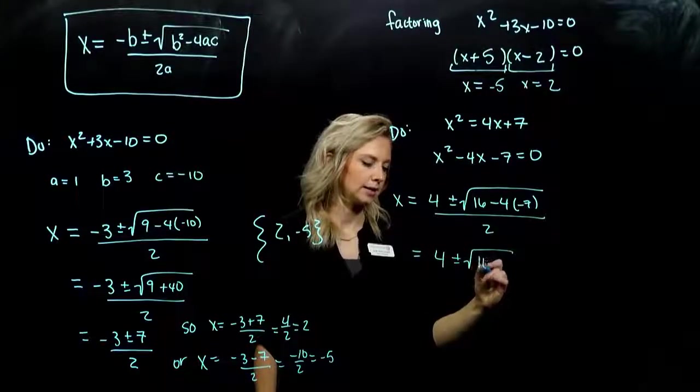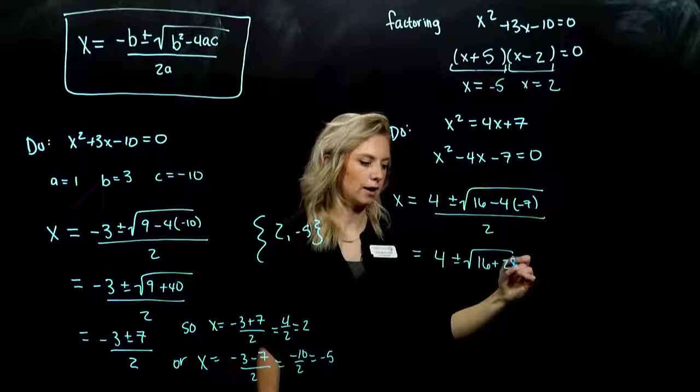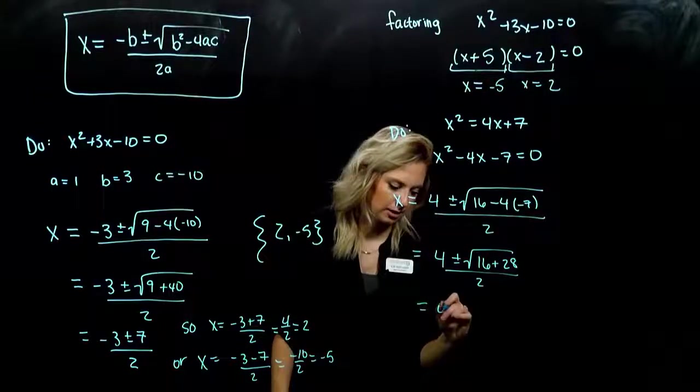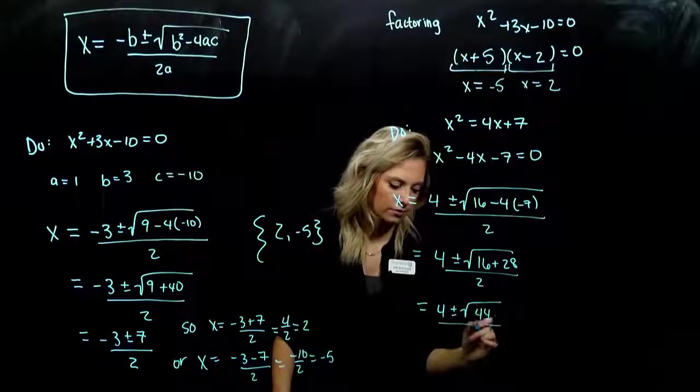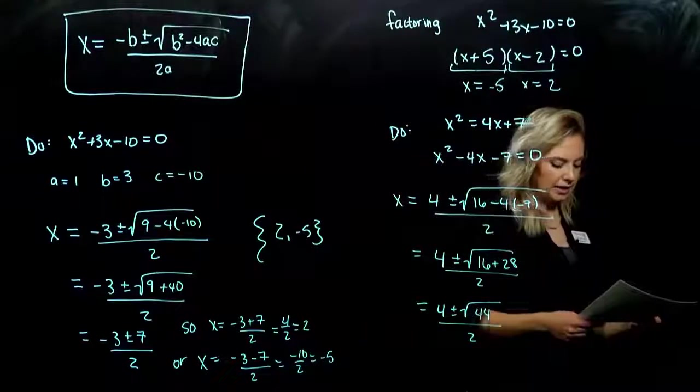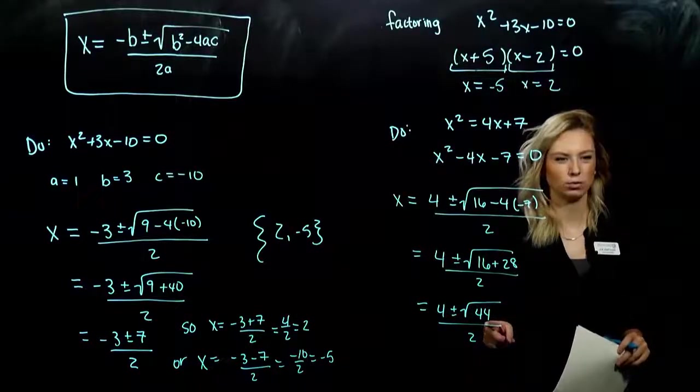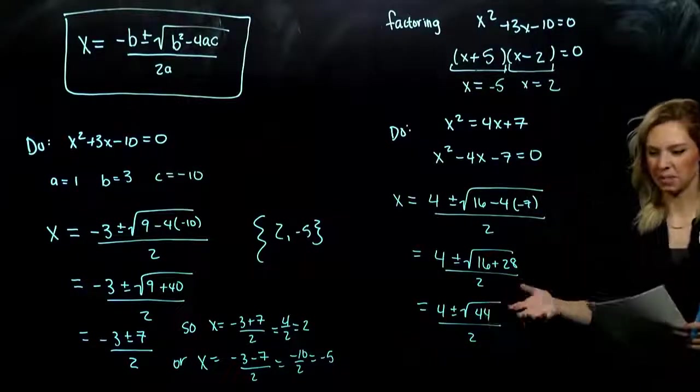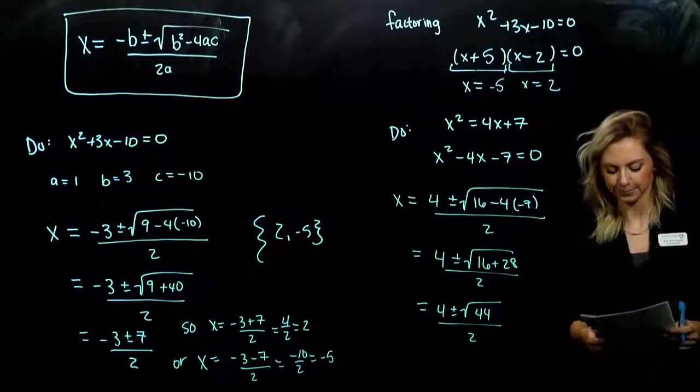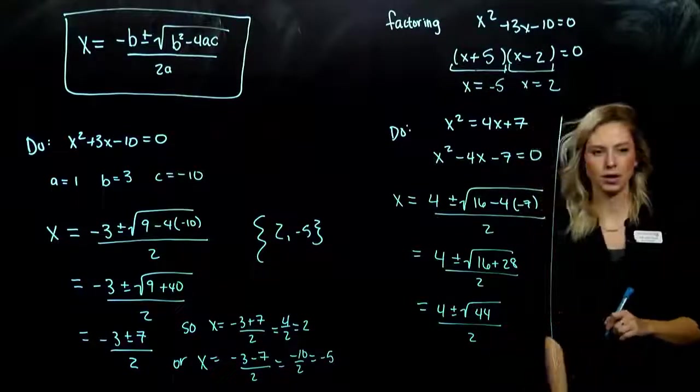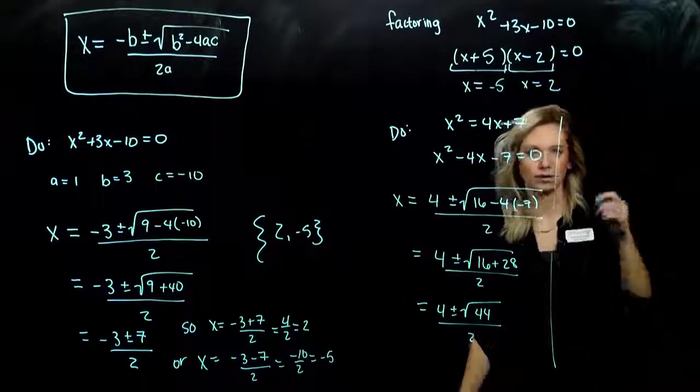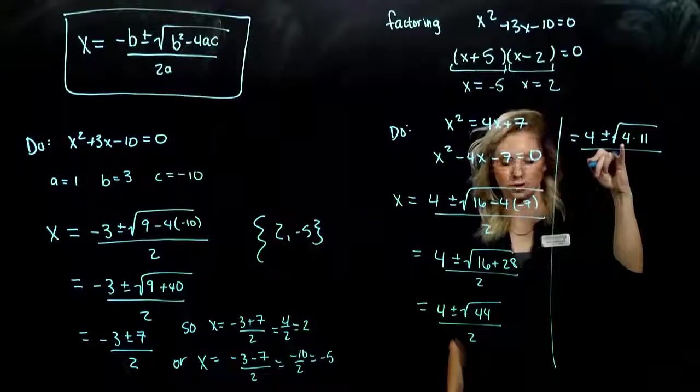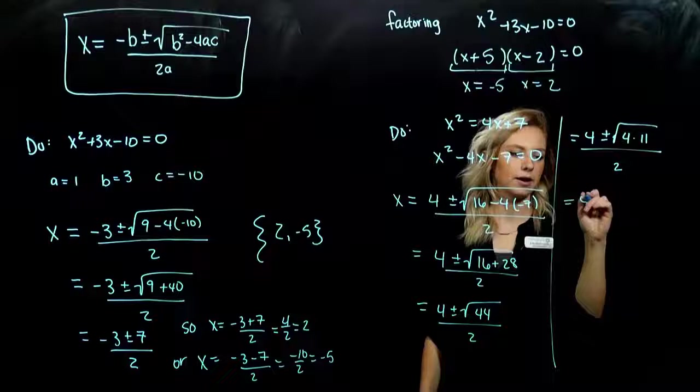So let's simplify. I've got 4 plus or minus 16 plus 28, all over 2. So underneath that radical, that radicand, is going to turn out to be square root of 44 divided by 2. But is 44 a perfect square? No. So it's not going to evaluate out nicely like we've had before, where we get numbers, whole real numbers out. In this case, we're still going to have radicals left over. So what can we break 44 up into? What perfect square and leftovers? 4 plus or minus 4 times 11.